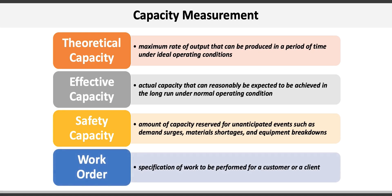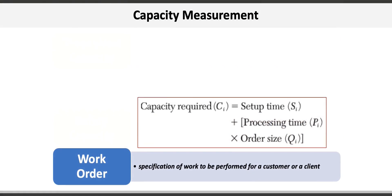Capacity can also be measured for a specific job via a work order specification of work to be performed for a customer or client. Here, we want to know how much capacity a particular job or order will use to help us determine what's left to allocate to other jobs and projects and to aid in scheduling.